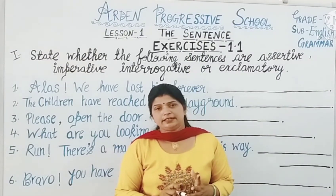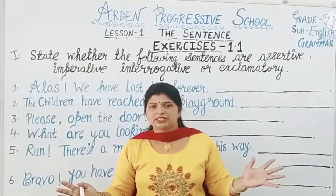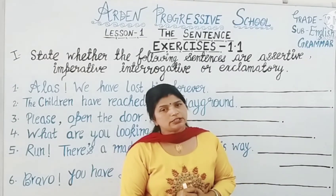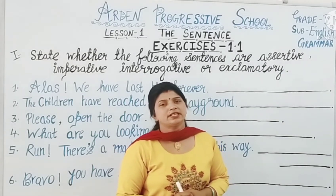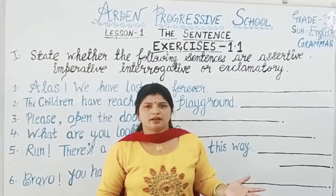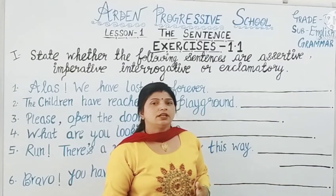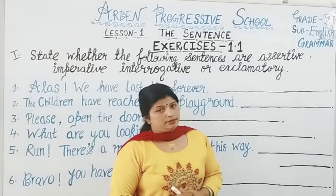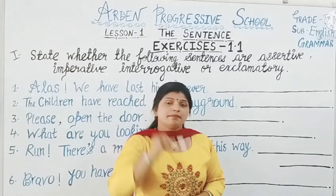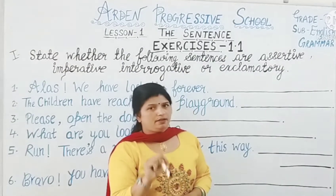The third type of sentence is imperative sentences, in which we order, command, sometimes request, or wish. These types of sentences are known as imperative sentences. The last one is exclamatory sentence, which states some sudden, strong feeling of happiness, sadness, pain, joy, or grief. At the end of these sentences, one exclamation mark is there.